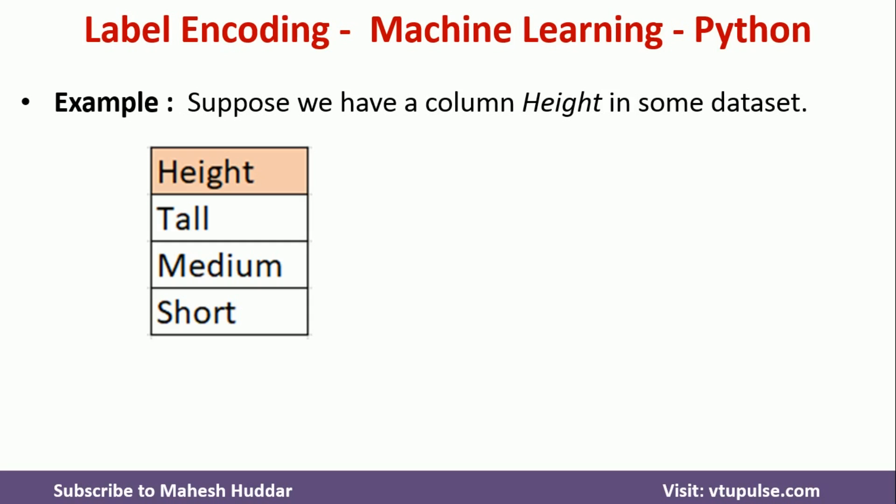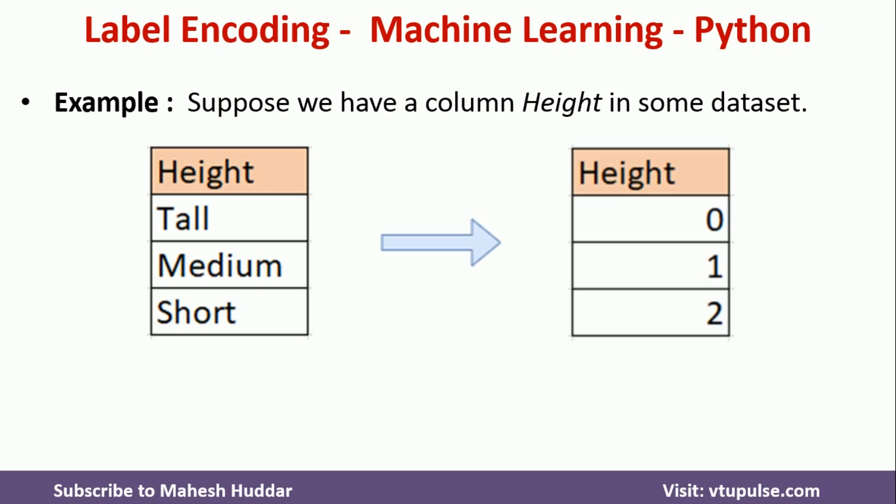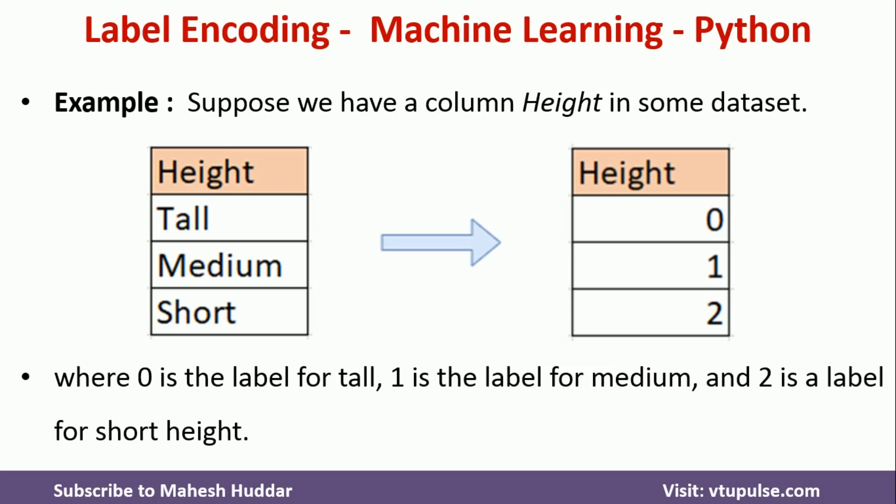We cannot give this data as input to any machine learning algorithm, so first we need to convert it into numeric values. After applying label encoding, we will get 0, 1, 2 — wherever there is tall it will be replaced with 0, wherever there is medium it will be replaced with 1, and wherever there is short it will be replaced with 2.